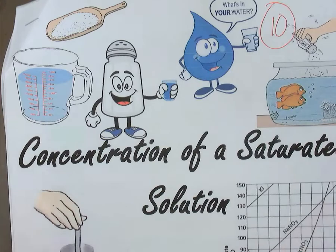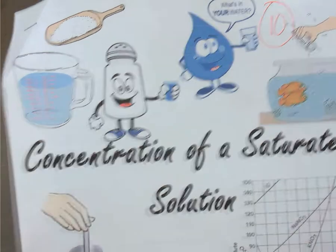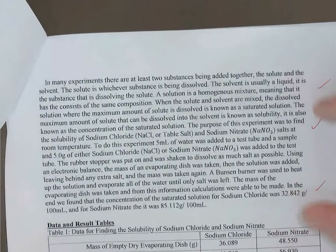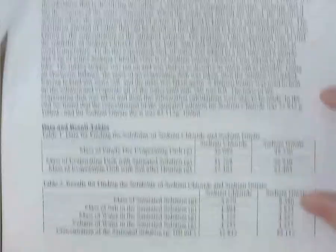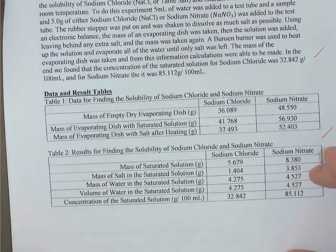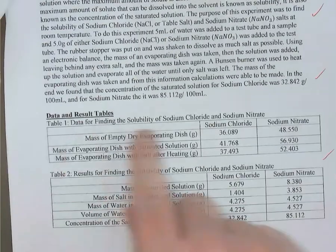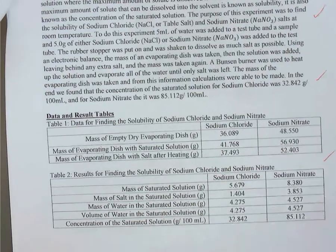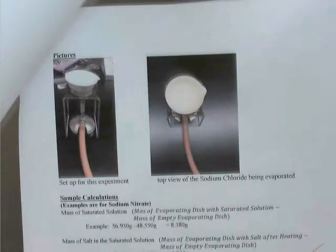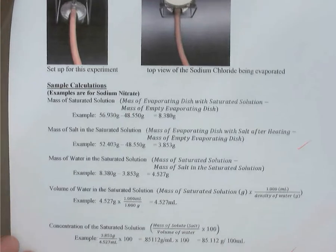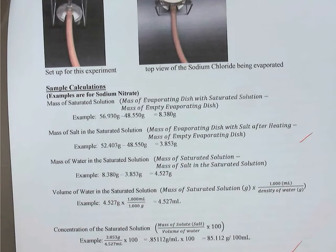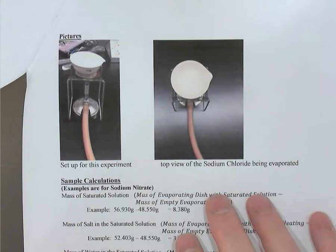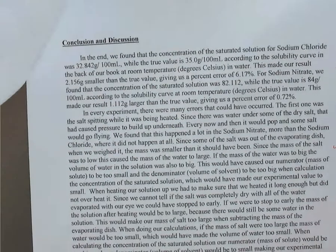So to summarize a grade 9 lab report: a title page, your abstract with its four parts, data and results tables with titles and units clearly labeled and nicely formatted, sample calculations for each result in your results table, optional pictures, and finally a conclusion and discussion.